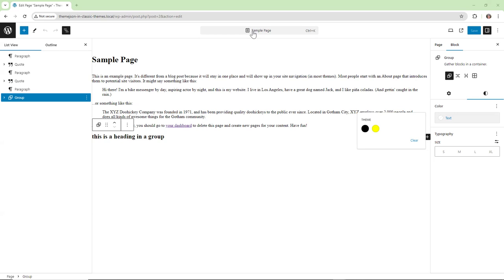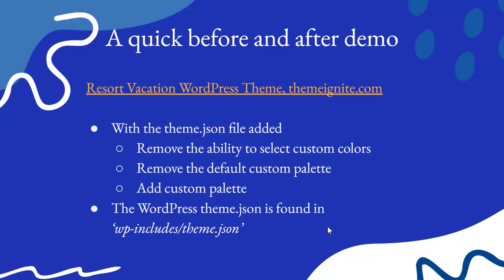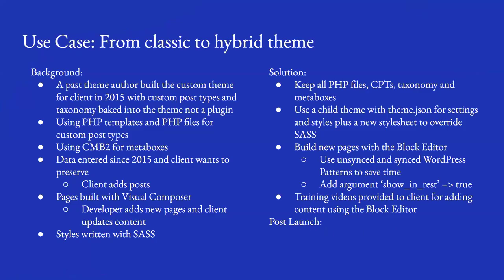We have a question from Shelly: 'I am not clear where you add the REST API.' I'll go back to that slide — 'show_in_rest.' When you are writing out your custom post types you have your arguments, and 'show_in_rest' equals true would be added there. It's not wp-config — it's when you're creating your custom post types within your PHP files.